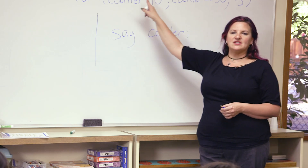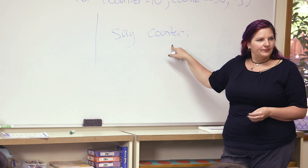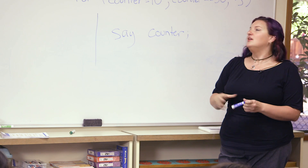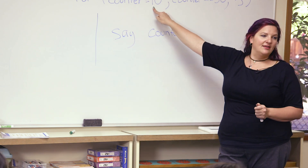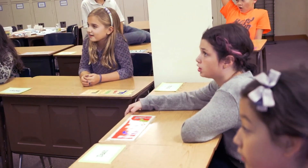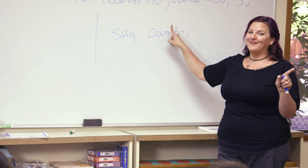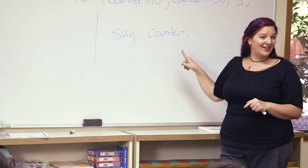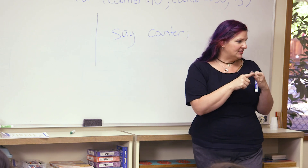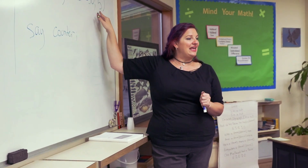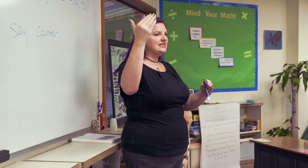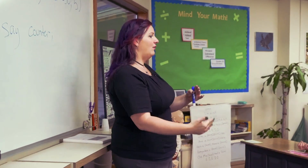Now we're not actually going to say the word 'counter' — it means something different than what we're reading. So the first time through, what are we actually going to say? Ten. And then the second time through? Fifteen. Then twenty, twenty-five, thirty. Where do we stop? Thirty. So that's how a for loop works — it lets you choose your start point, your end point, and how much you count by. We call that the increment. Can you say increment? Increment. It's like increasing, but we're increasing something by the same amount over and over.